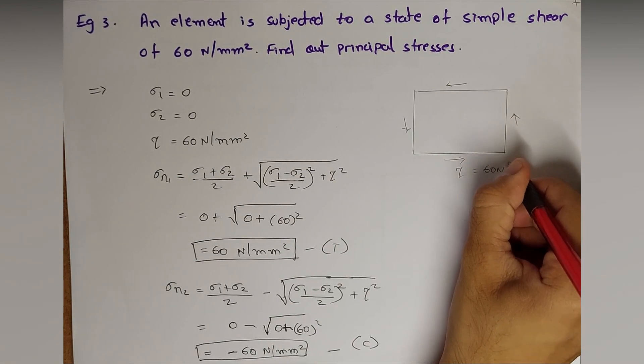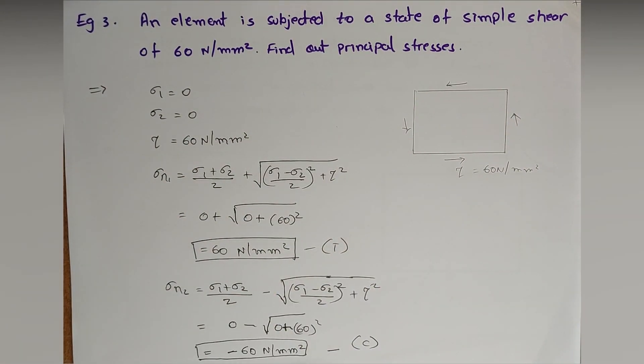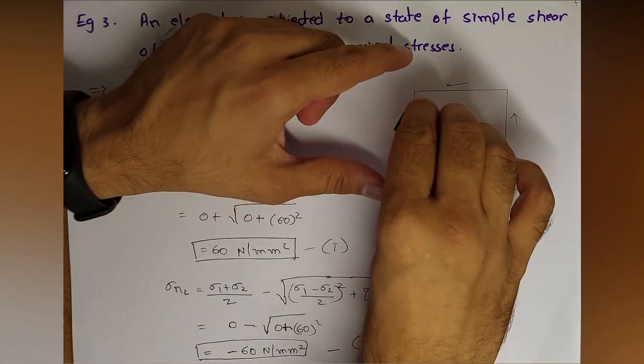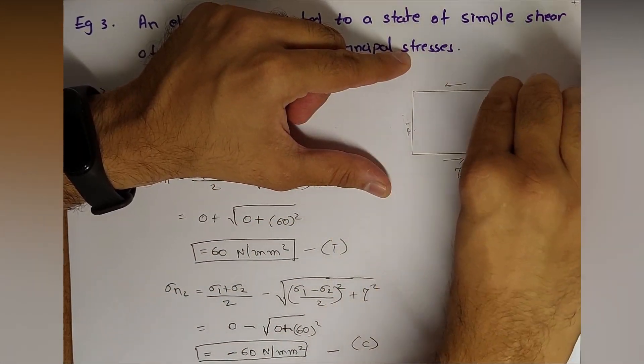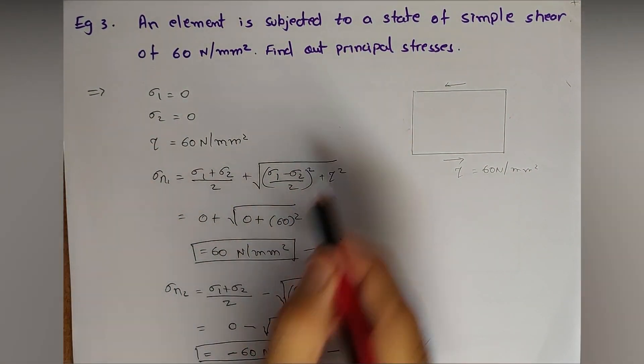I'll just correct the arrows because it is 60 Newton per mm square positive. It is clockwise in vertical plane. We are not concerned with the horizontal plane, but in vertical plane it is clockwise, like this. The couple is rotating clockwise.